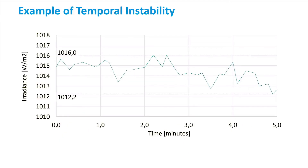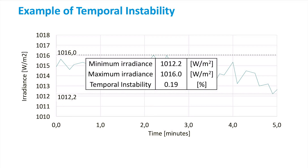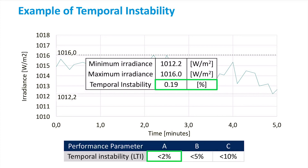The irradiance measurements are carried out in the simulator via a current-voltage measurement system which consists of a suitable test cell connected to a source meter unit. The short-circuit current of the cell is measured repeatedly over the required time period, as shown in the graph, where the typical irradiance of the steady-state simulator is plotted as a function of time, highlighting its fluctuations. By using the maximum and minimum irradiance measured, it is possible to obtain the temporal instability, also called irradiance deviation. In this example, the solar simulator scored an A because the instability is lower than 2%.